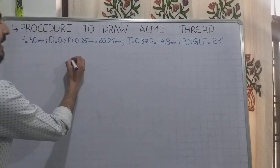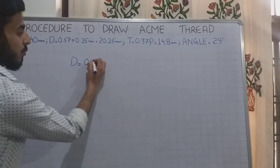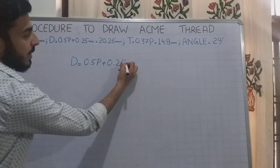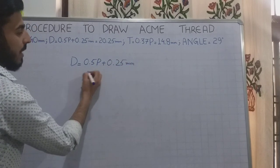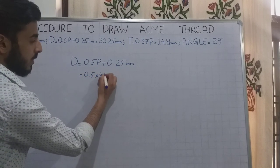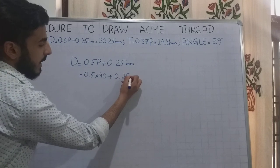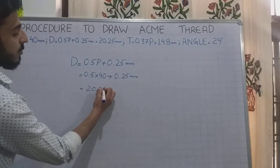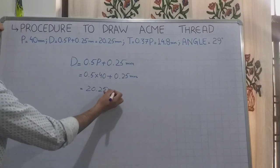Then, what is the depth of this thread? The depth is 0.5p plus 0.25mm. Here I will give the pitch value which is 40, plus 0.25mm, which comes out to be 20.25mm.